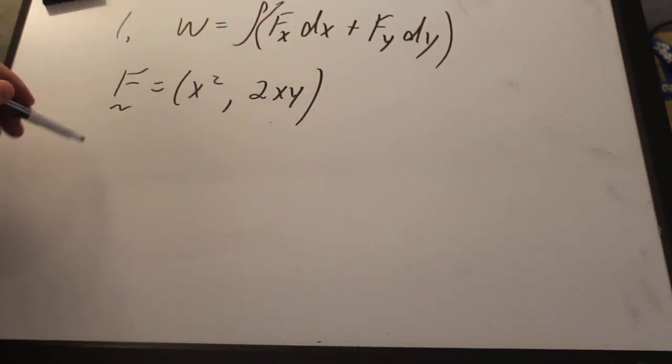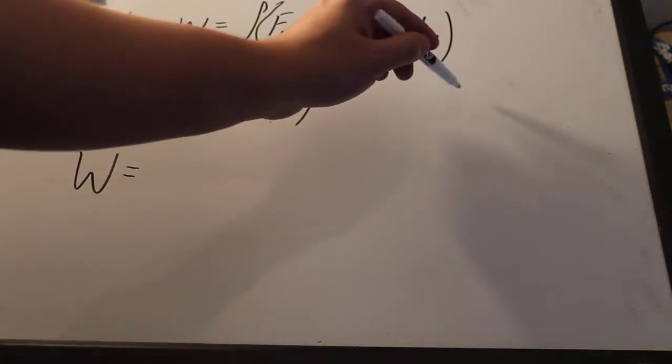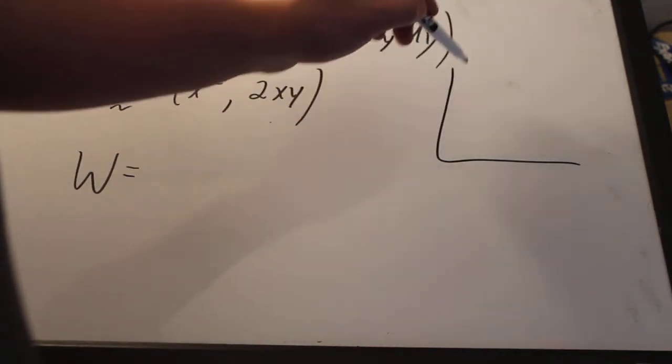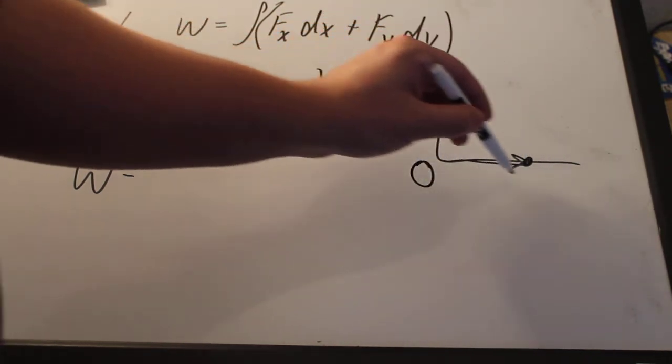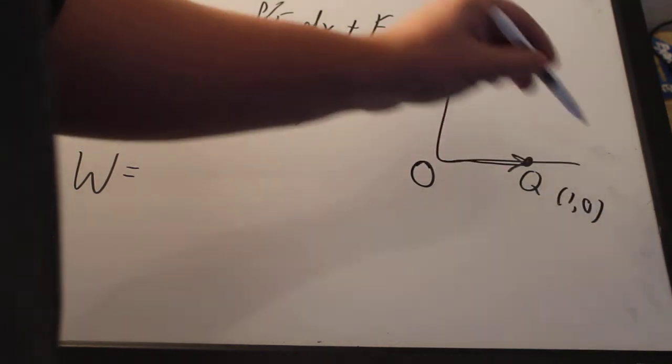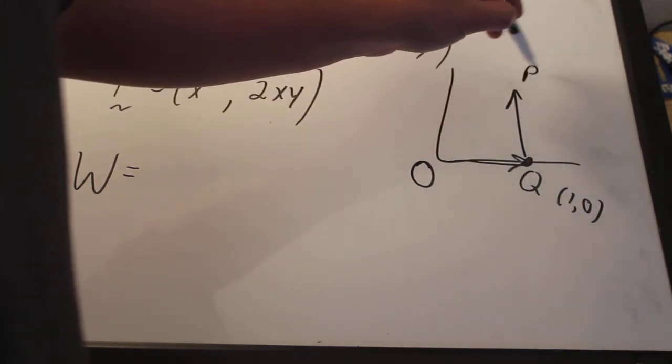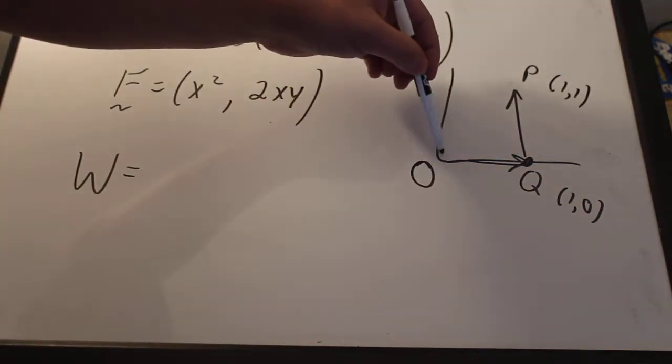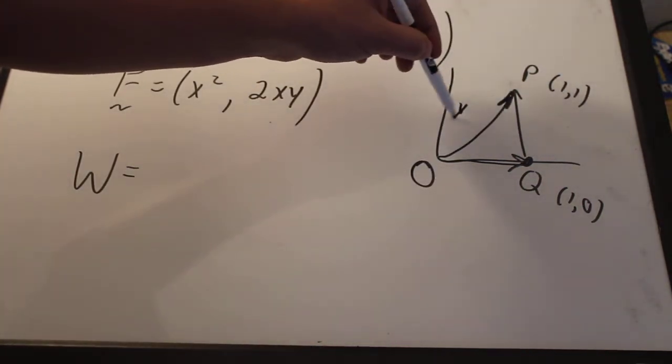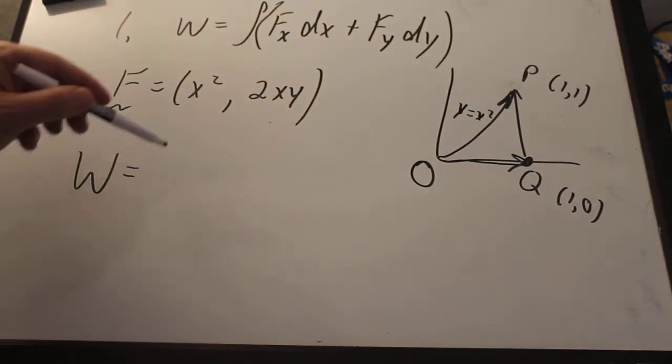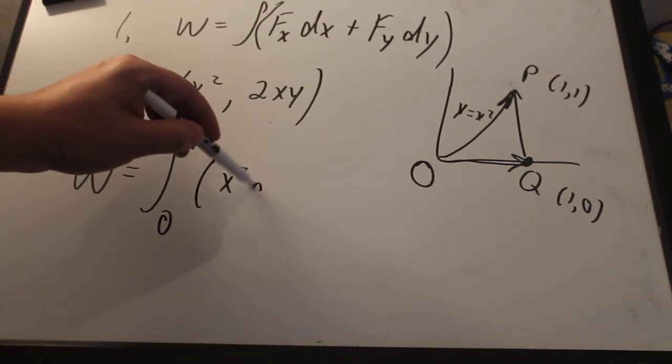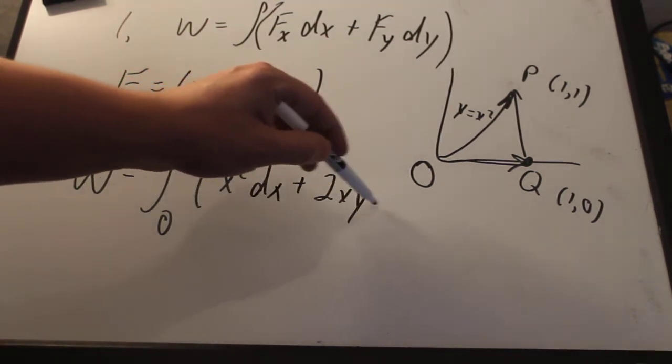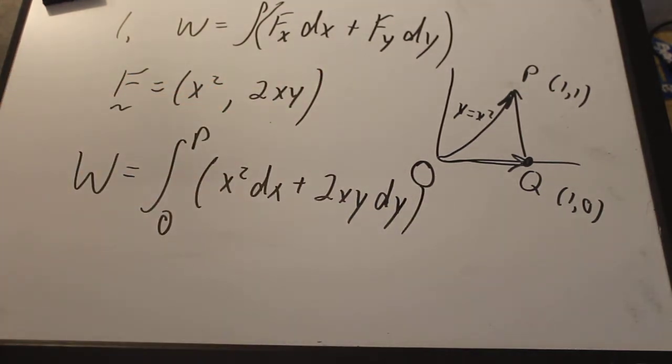I have x squared in the x direction and 2xy in the y direction. And so if I write out the work, that means the work will do it along the same path you have in the homework. So my first path is going to be from the origin to a point q at 1,0 and then up to point p at 1,1. And then my second path is going to be straight to p along y equals x squared. So the work is from the origin to p on x squared dx plus 2xy dy. All right, so that's the problem statement.